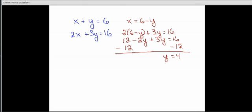If we know that y equals 4, we can replace 4 for the y in either of the original equations. Let's take the first equation. And if we say x plus y equals 6, now we can say x plus 4 equals 6. So therefore, x equals 2.